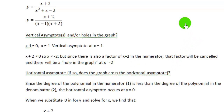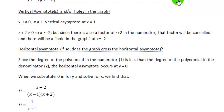For horizontal asymptotes, we check the degree of the polynomial in the numerator and the degree in the denominator. The numerator is a first-degree polynomial, and the denominator is a second-degree polynomial. According to the rules of horizontal asymptotes, this means there will be a horizontal asymptote at y equals 0.